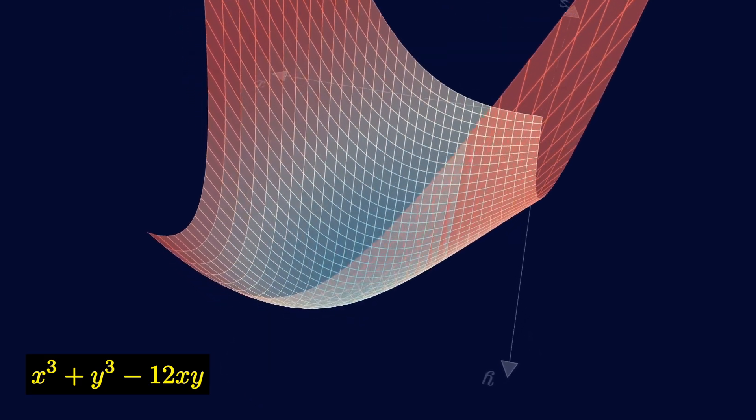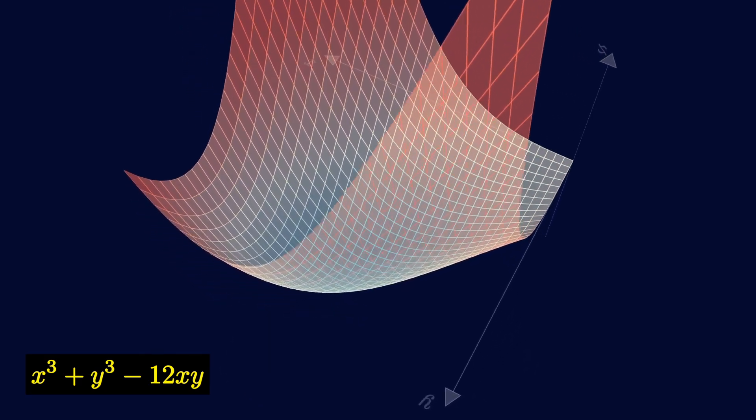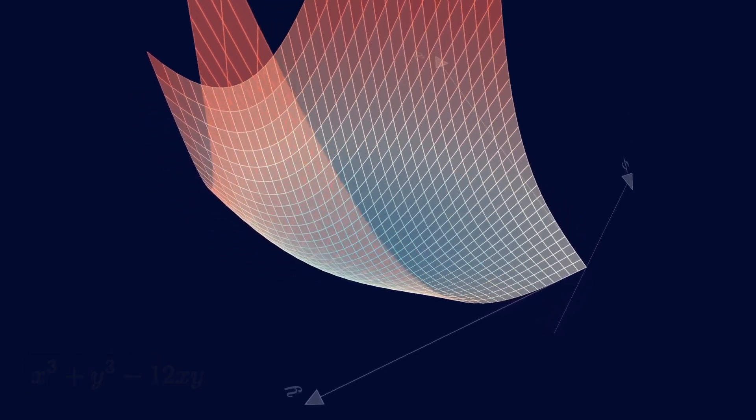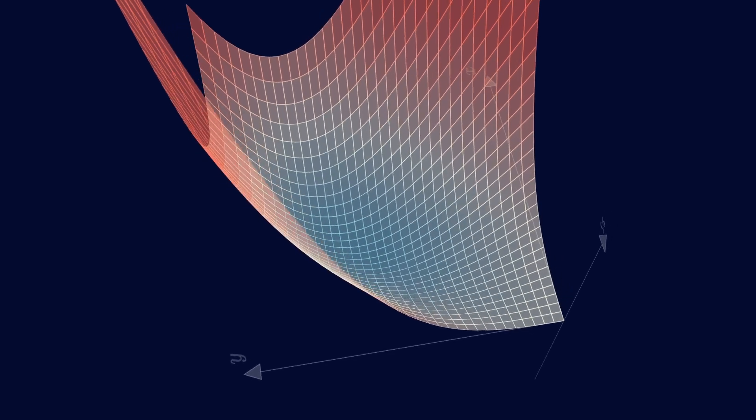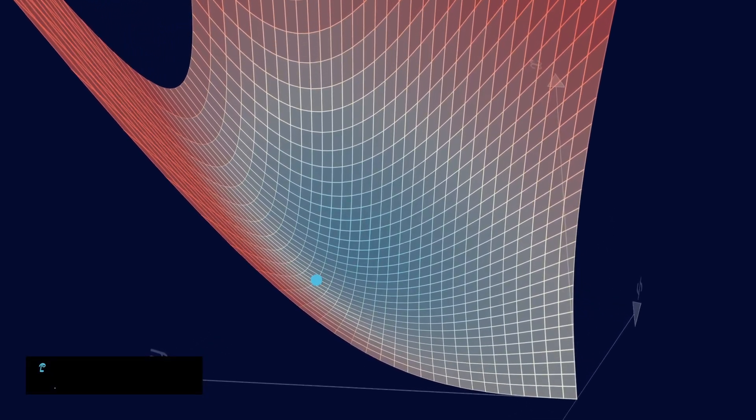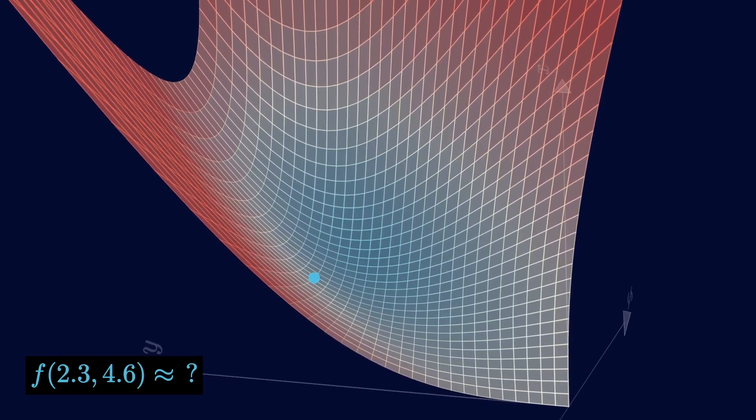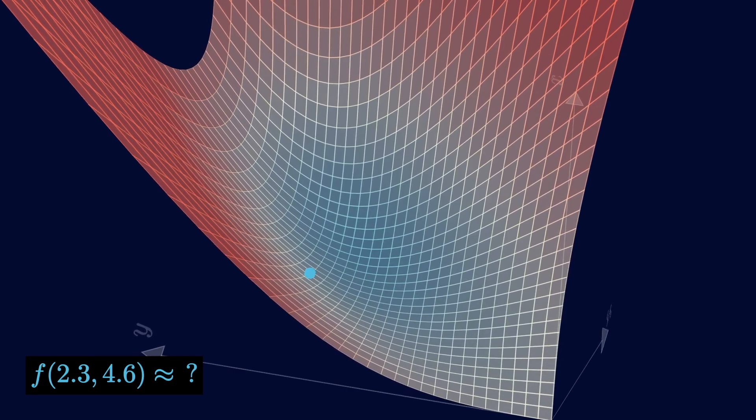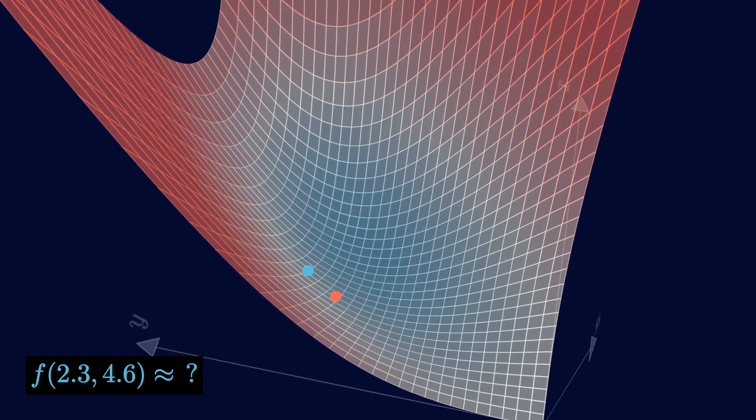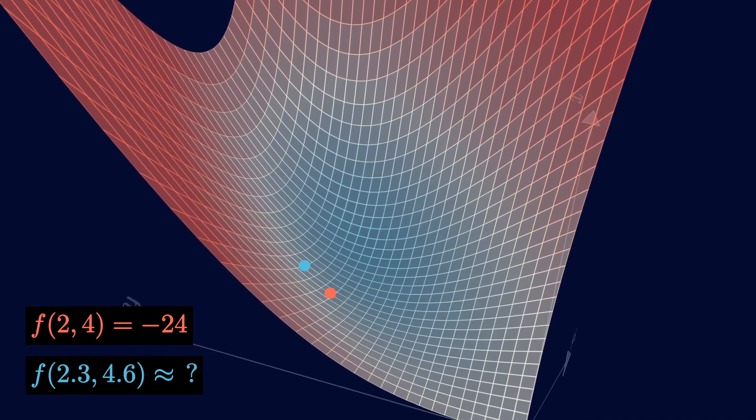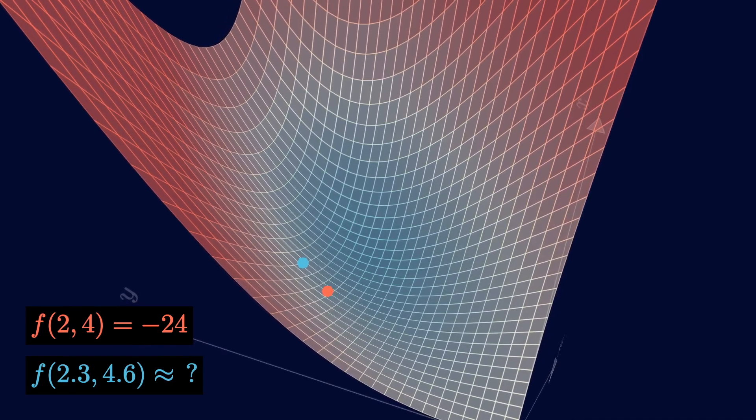Alright, to answer this question, I'm going to give you something to think about. Let's say you don't know what this function is. And now I want you to estimate the value at this blue point, which is x equals 2.3, y equals 4.6. And all I'm going to tell you is that the function value at this red point, which is at 2, 4, is minus 24. What's your best guess for the blue point's value?